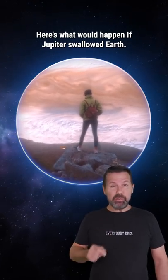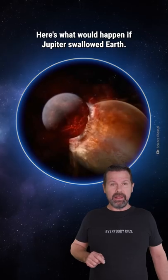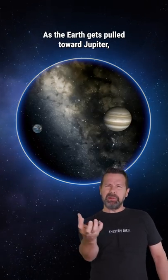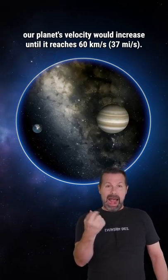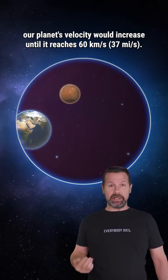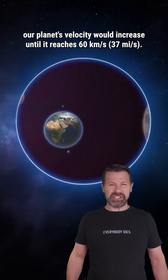Here's what would happen if Jupiter swallowed Earth. As the Earth gets pulled toward Jupiter, our planet's velocity would increase until it reaches 60 km a second.